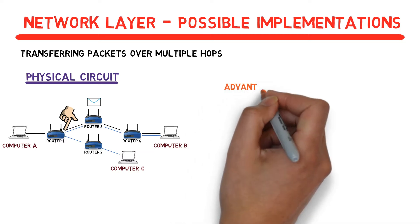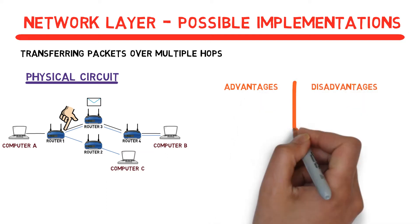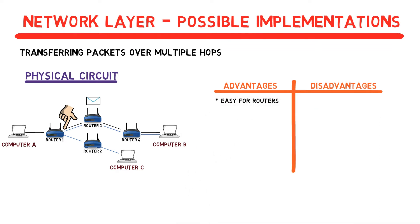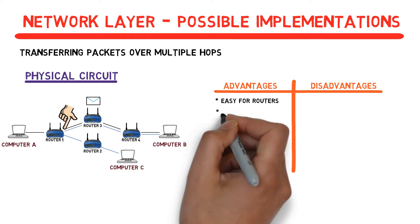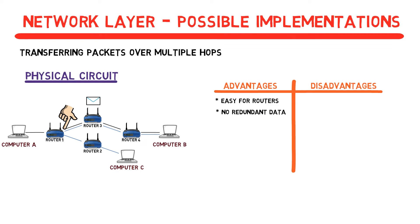What are some advantages and disadvantages of this model? One good thing is that it's very easy for routers. Once the connection is established, the router's job is very simple: just forward the packet, and no real thinking is required. In addition, note that the packets don't contain additional redundant information here. The routers know what to do with each packet without any extra data — in other words, without any overhead.